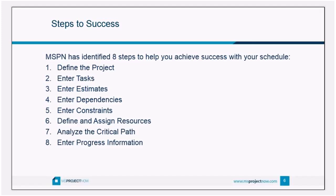Step one: define the project — setting options before you ever enter any tasks. Step two: enter those tasks. Step three: enter estimates, then dependencies, then constraints. Step six: define and assign resources. Step seven: look at your critical path. And finally, the last step is entering progress information, because the only constant in any project is change, and we need a living, breathing schedule with good forecast and accurate tracking information.